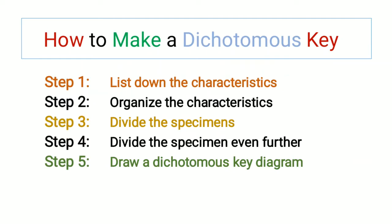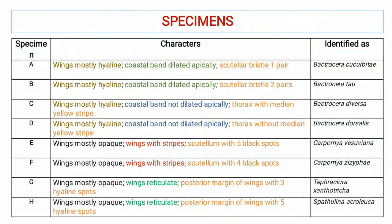These are the steps you need to follow while making a dichotomous key: Step one is to list down the characteristics, then organize the characteristics, divide the specimens based upon these characteristics, further divide the specimens based on additional characteristics you explore, and finally draw a dichotomous key diagram.